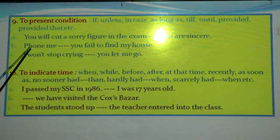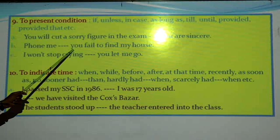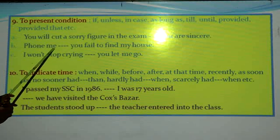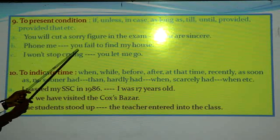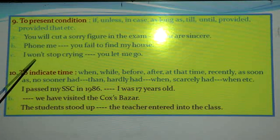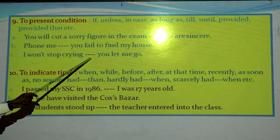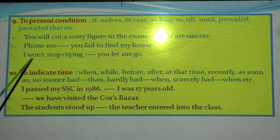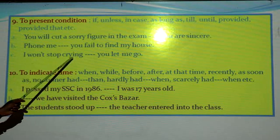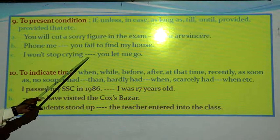Number B: 'Phone me — you fail to find my house.' In the gap, we can use 'in case': 'Phone me in case you fail to find my house.' Number C: 'I won't stop crying — you let me go.' Here we can use the sentence connector 'until': 'I won't stop crying until you let me go.' In this gap, we can use 'until'.